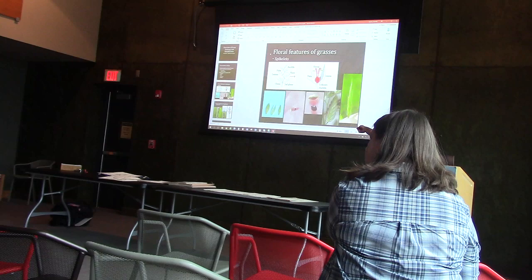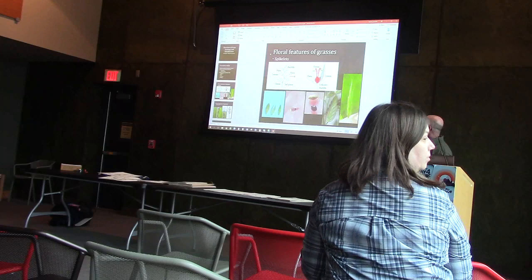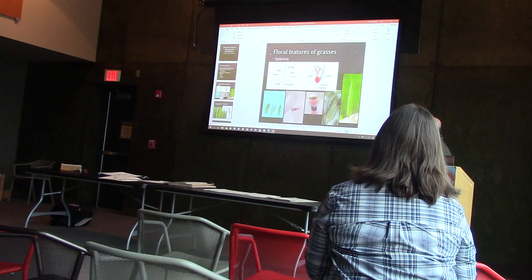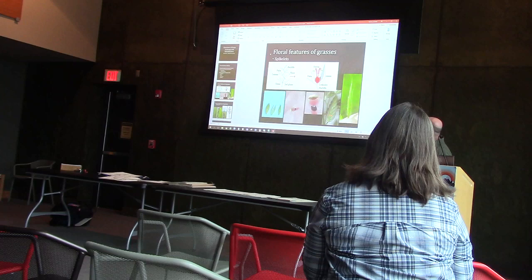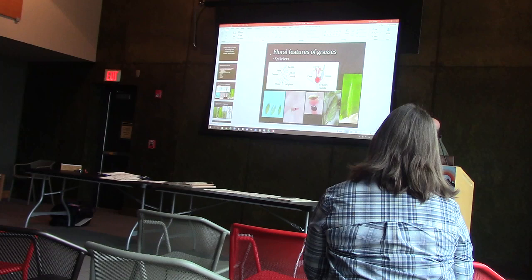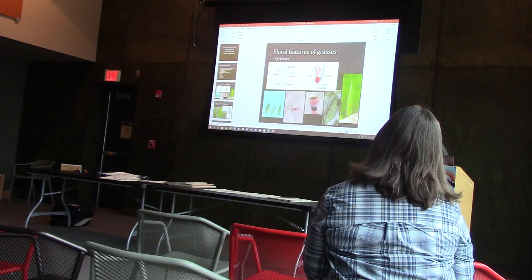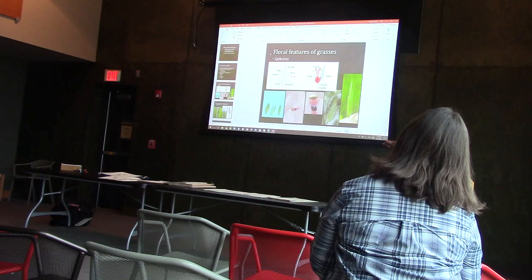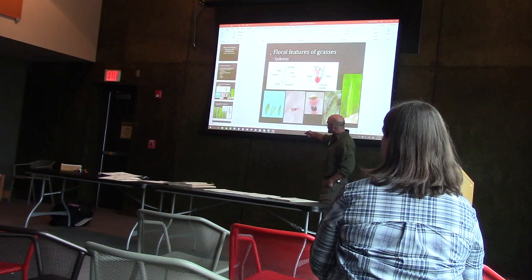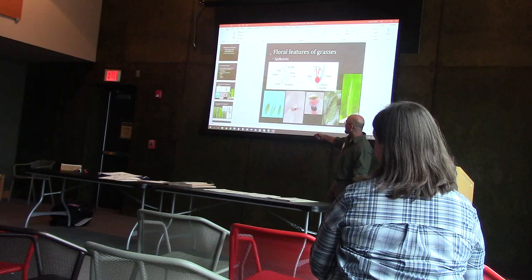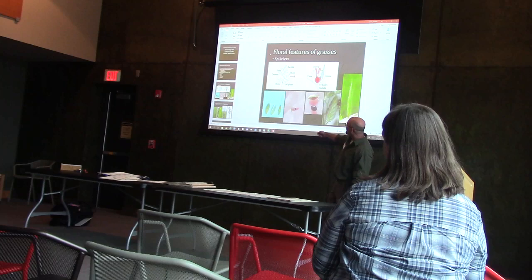Some examples of different types of spikelets: this is Eragrostis ciliaris, I believe. Here we've got the glumes down at the bottom — the reduced scales that don't have any flowers in them — and about a dozen florets in the spikelet. This is ciliate brome or fringe brome, Bromus ciliatus. Here we've got two glumes down at the bottom and onto spikelets, about six. This is Alopecurus carolinianus, the Carolina foxtail. Here we have the full spikelet, and here it is with the glumes pulled away from the floret. Notice this long awn is actually attached back there.